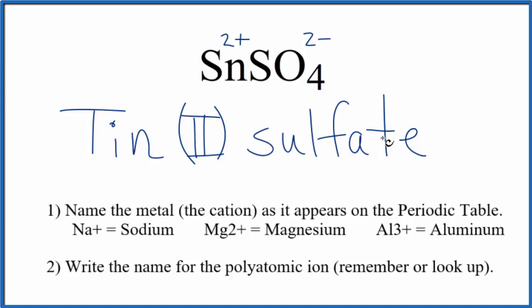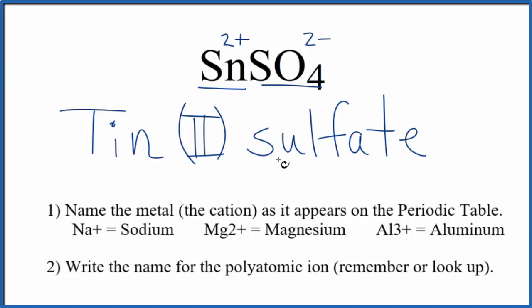If you were given this name and asked to write the formula, you'd see that the tin, Sn, has a two plus ionic charge, and you would also know sulfate has a two minus. So you only need one tin atom and one sulfate ion for tin(II) sulfate.